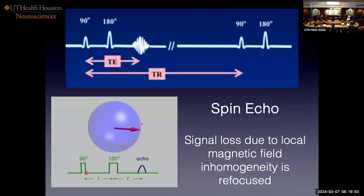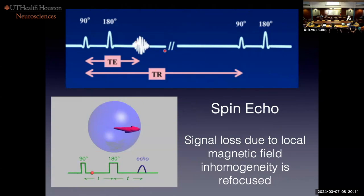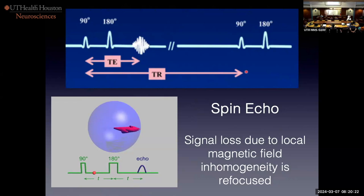In a spin echo, after the 90-degree pulse there's rapid dephasing due to T2 star effect, and the 180-degree pulse causes it to reform at a time exactly equal to the time between the 90 and the 180-degree pulses. This is the sequence diagram — it tells the radiologist everything. It's a spin echo: there's a 90, 180, and then an echo, repeated multiple times. TE is defined as the time from the 90-degree pulse to the echo, TR from one 90-degree pulse to the next. Signal loss due to magnetic field inhomogeneity is refocused by this time reversal.